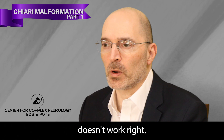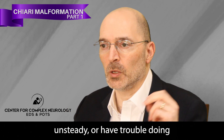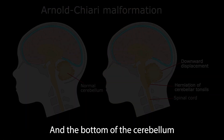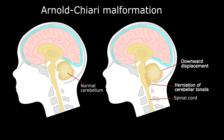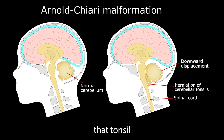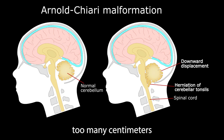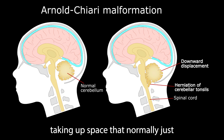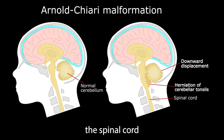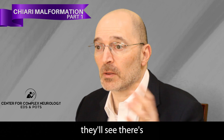When the cerebellum doesn't work right, that's when we might be unsteady, have trouble doing fine movement, or be dizzy. The bottom of the cerebellum generally comes to a point and is often referred to as the tonsil — the cerebellar tonsil. There's a normal range of how far down towards the foramen magnum that tonsil should go. If it comes down too much, too many centimeters, and is in the foramen magnum, it can take up space that normally just the spinal cord should have to itself.